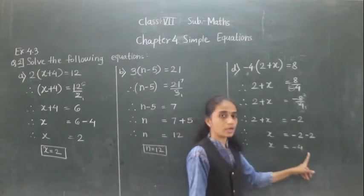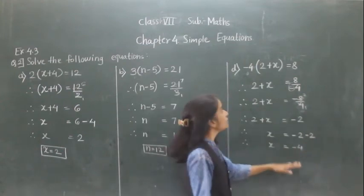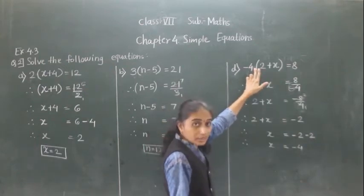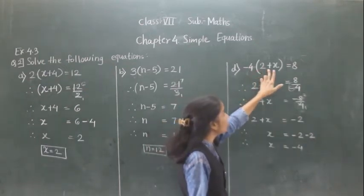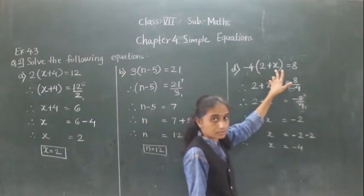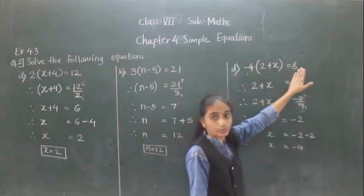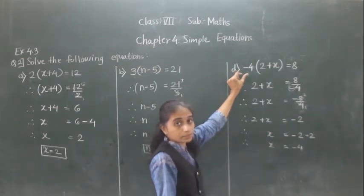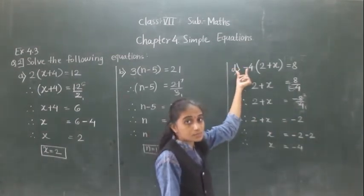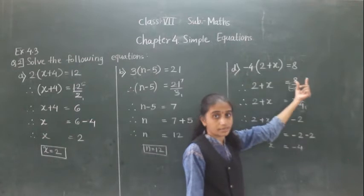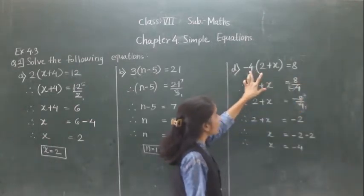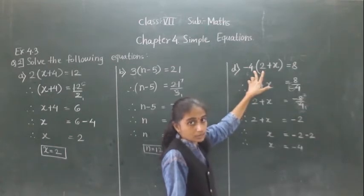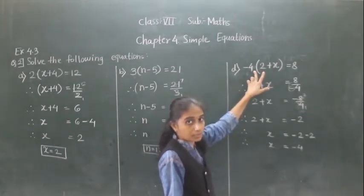So x is equal to minus 4. Let me repeat this once again. Minus 4 is multiplied into bracket 2 plus x equals K. First step: we are going to transfer minus 4 to the right hand side. The operation between minus 4 and the bracket is multiplication.